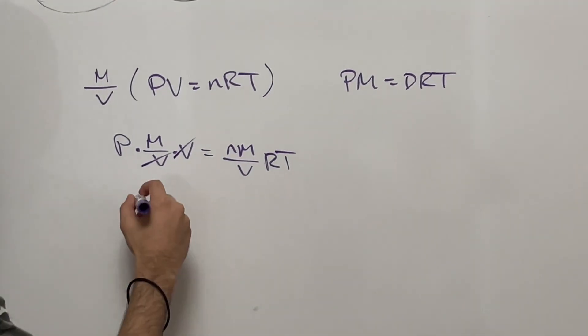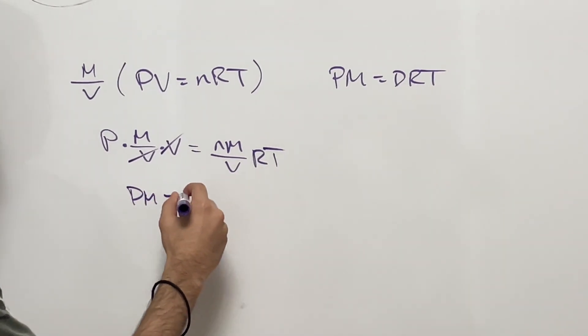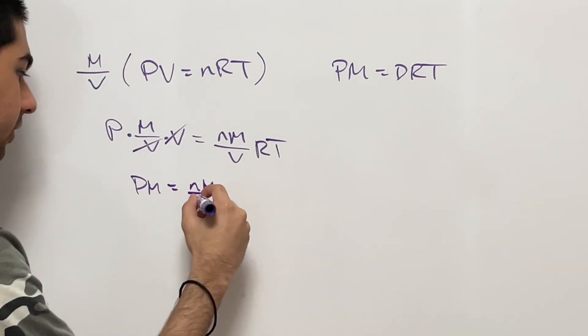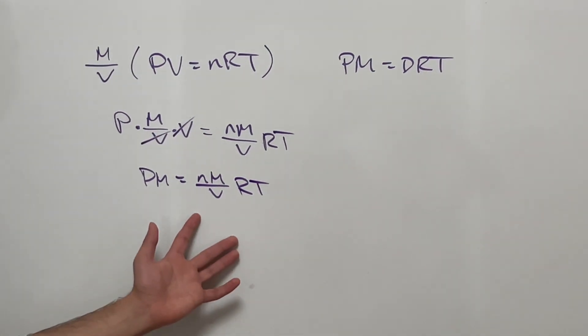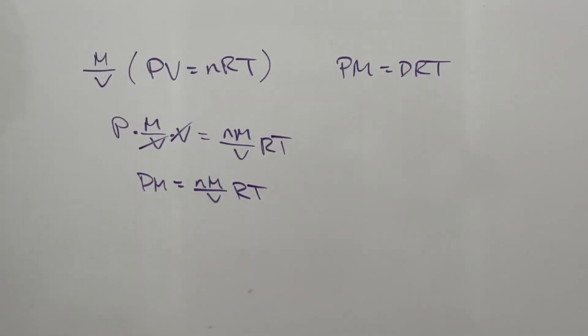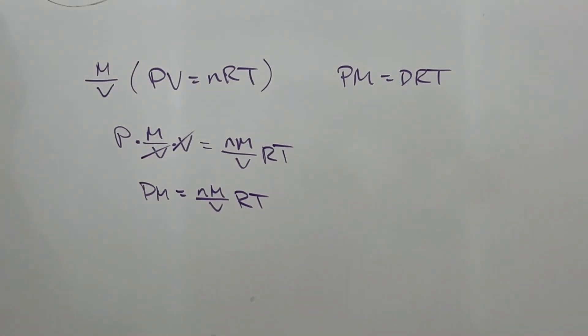Now we can clearly see here volume on the bottom, volume here - they cancel out. We get that PM is equal to nM over V times RT. Now the question is, what is nM over V? What quantity does that represent?